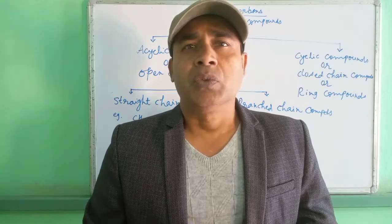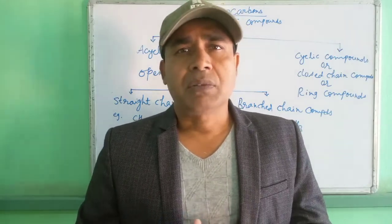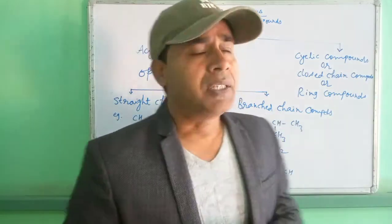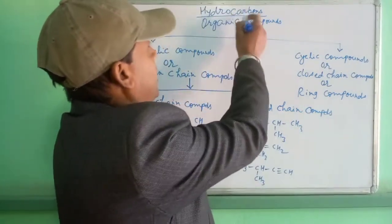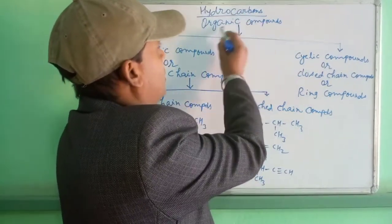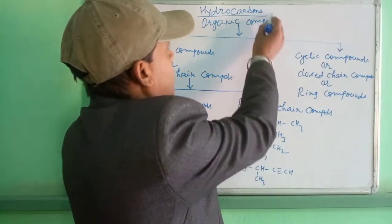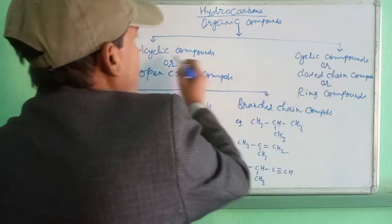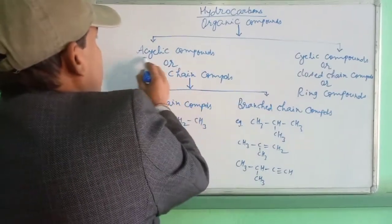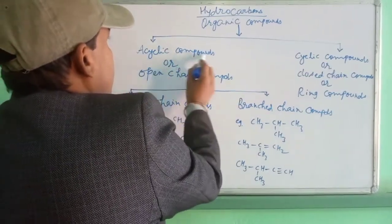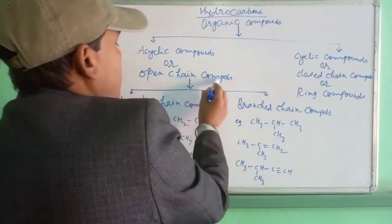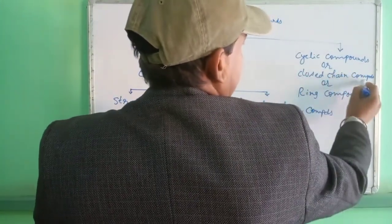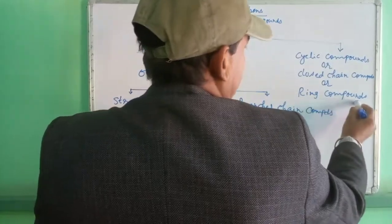So how to classify these compounds? Classification of hydrocarbon or organic compound depends upon the structure of the compound, the number of bonds between carbon and carbon atoms, or the elements present other than carbon and hydrogen. Hydrocarbons are broadly classified into two main classes: first is the acyclic compound or open chain compound, and second is the cyclic compound or closed chain compound or ring compound.